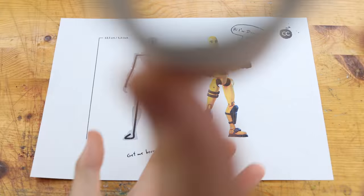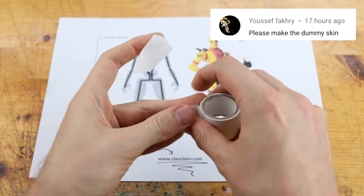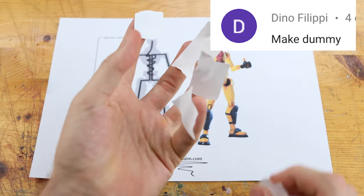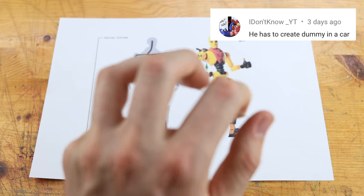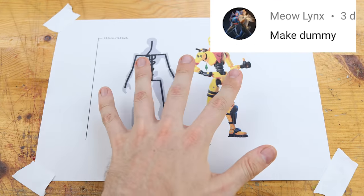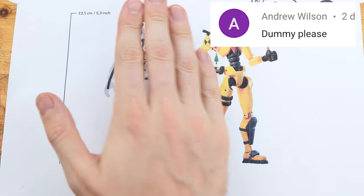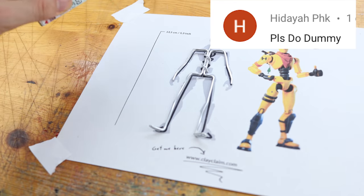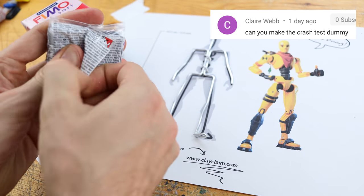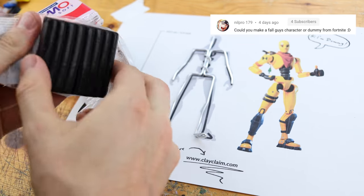I fell in love with the Dummy skin from Fortnite and I think I found a really easy way to create him. We start with aluminum wire as the skeleton, as you can see on the blueprint, and we need only six colors in total to create him.